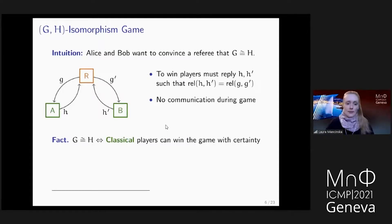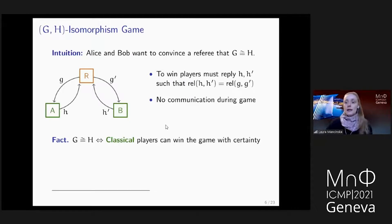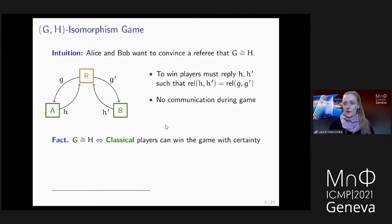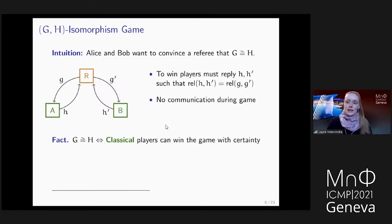The way we've designed this game, it's not hard to show that if the two graphs G and H are isomorphic, this is equivalent to conventional or classical players being able to win this game. For instance, if the graphs are indeed the same, Alice and Bob could agree on some isomorphism mapping F from vertex set of G to H, and then simply respond according to it — Alice would respond with F(g) and Bob with F(g'). Because F was an isomorphism map, this relation would always be the same between the input and output vertices.